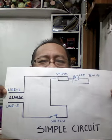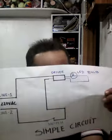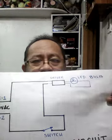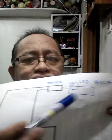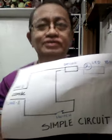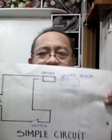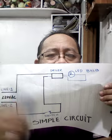Today I'm going to teach you how to identify a simple circuit component defect. So we start — I have a simple diagram here. It's all about electrical electronics. This is a simple circuit. We have what is called a driver, LED bulb, switch, and 20 volts AC.